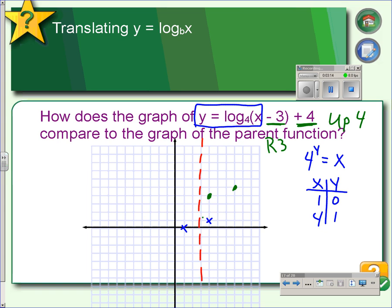So our graph is going to be in this location. The domain is going to be all real numbers where x is greater than 3. And the range will be all real numbers.